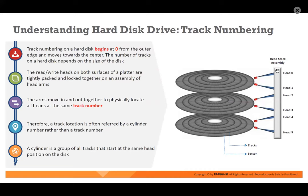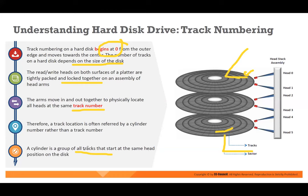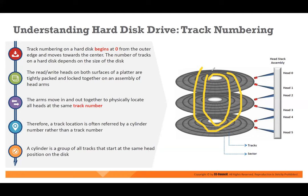Track numbers include head 0, head 1, head 2, head 3, head 4 — we have multiple tracks and sectors. The track number begins at zero and depends on the size of the disc. Heads on both surfaces of a platter are tightly packed and locked together. The arm moves together to physically locate heads at the same track number. A cylinder is a group of tracks that start at the same head position of the disc — cylinder one, cylinder two.